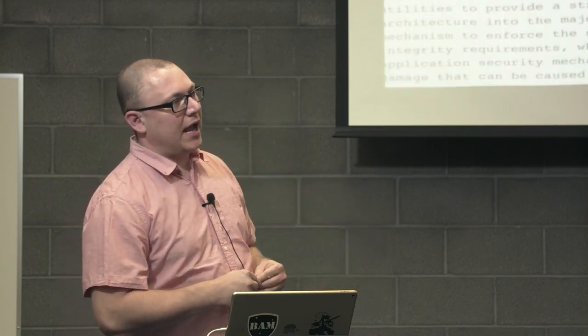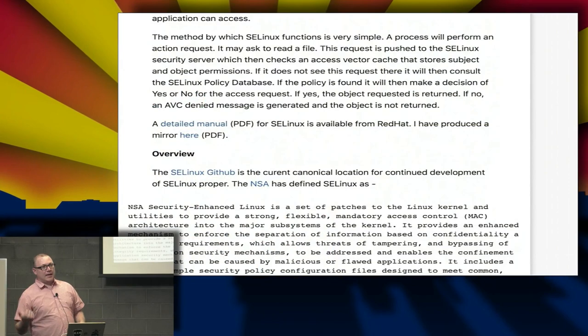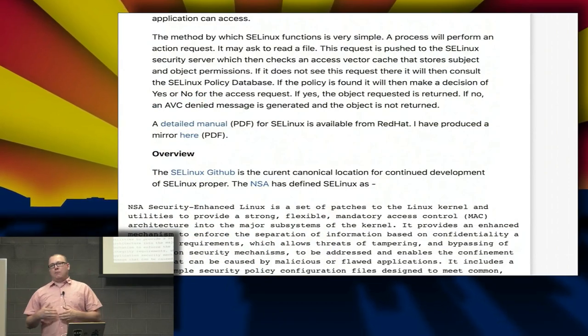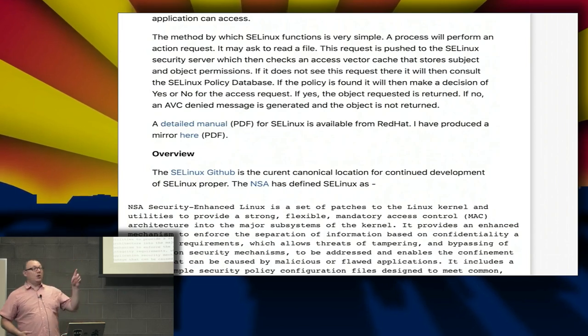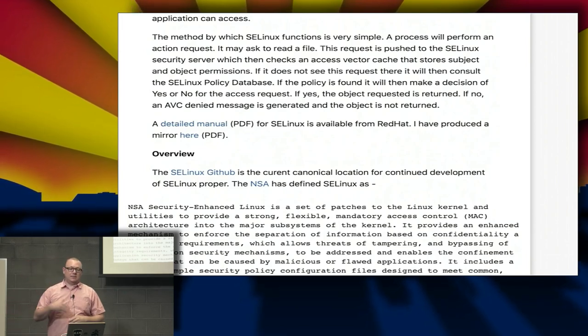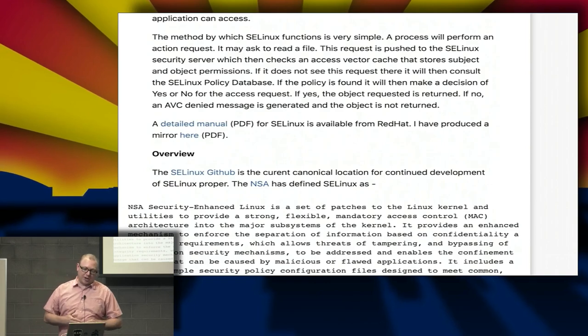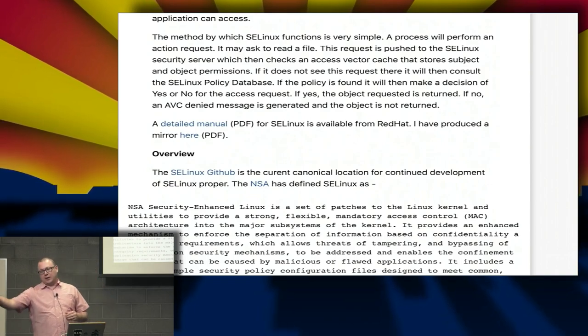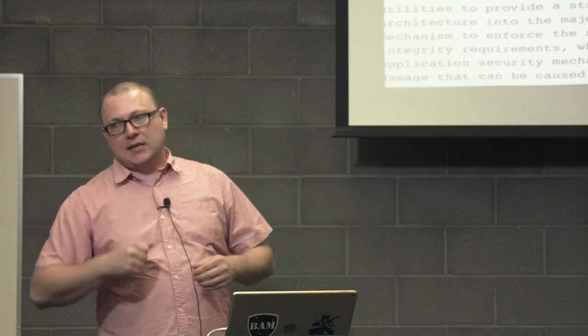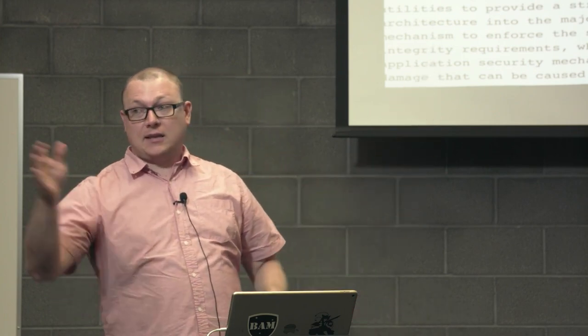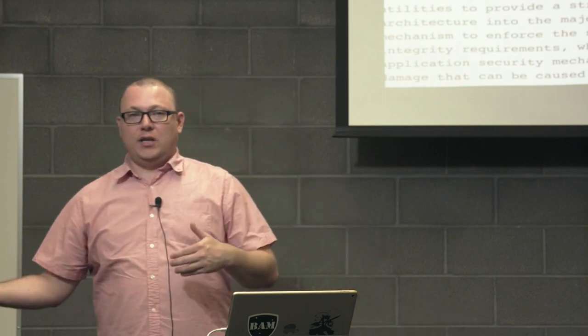Everybody familiar with the idea of using a web browser and then getting a crypto locker on your system? That's because the application was able to jump using your permissions. SELinux assists in protecting the system from malicious or flawed applications by limiting access to files, sockets, and other processes. SELinux functions in a simple method: a process performs an action request, asks to read a file, that request is intercepted by SELinux which checks an access vector cache storing subject and object permissions. If access is found, it passes; if not, the application fails, and SELinux always generates an AVC denied message so you can watch your logs.